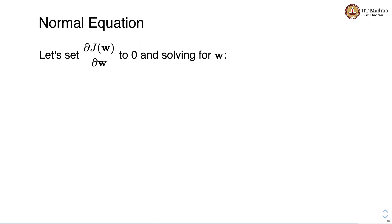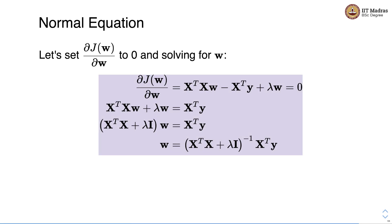We can obtain the weight vector using one of two methods: either the normal equation or gradient descent. In case of the normal equation, we set the partial derivative of the loss function with respect to the weight vector to 0 and solve for w. We end up with w equal to x-transpose x plus lambda I — where I is the identity matrix — take the inverse of the resulting matrix in the bracket, and multiply that with x-transpose y.